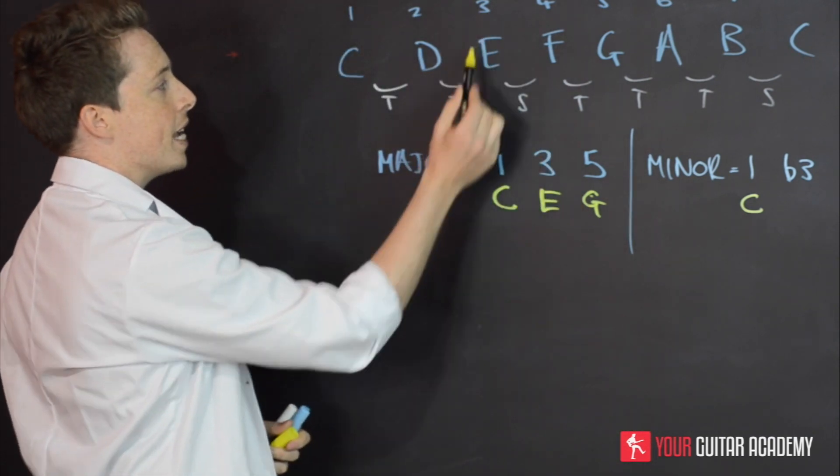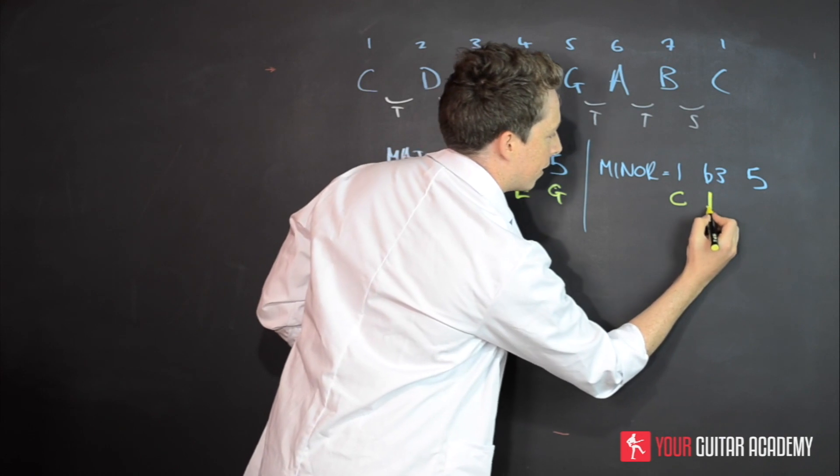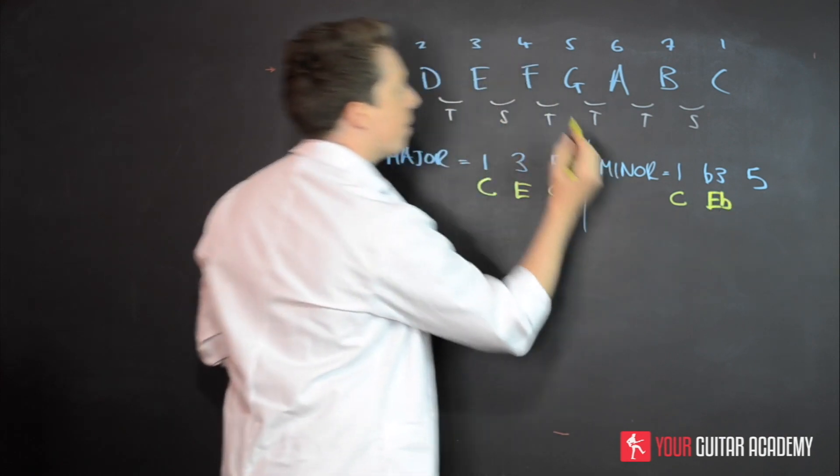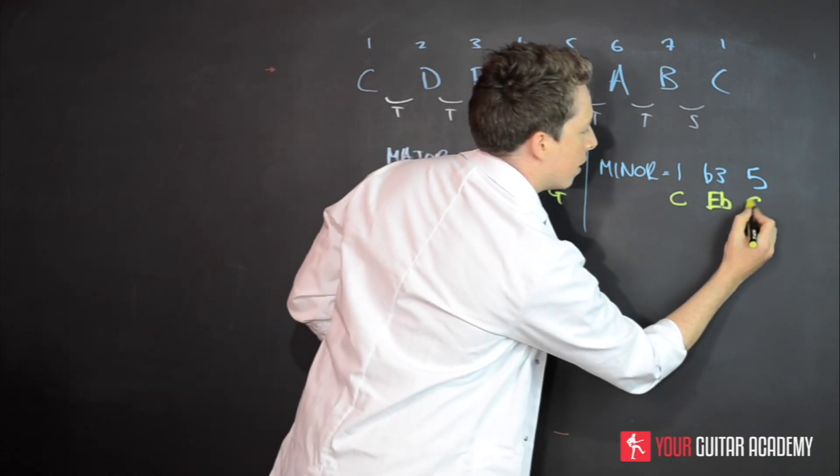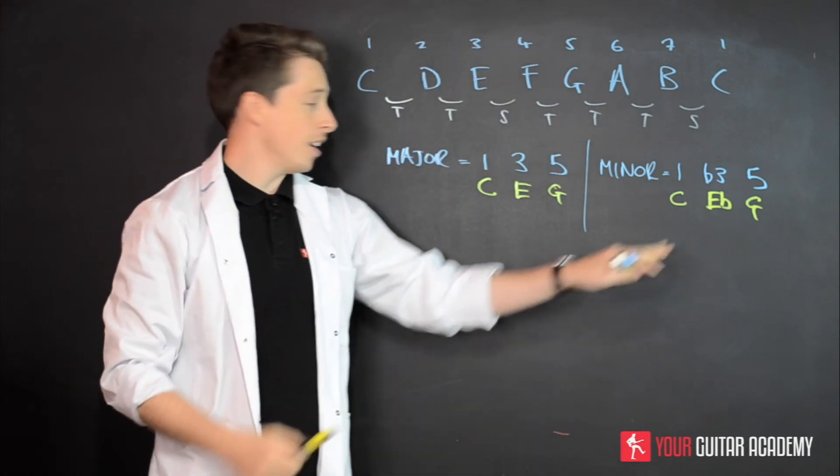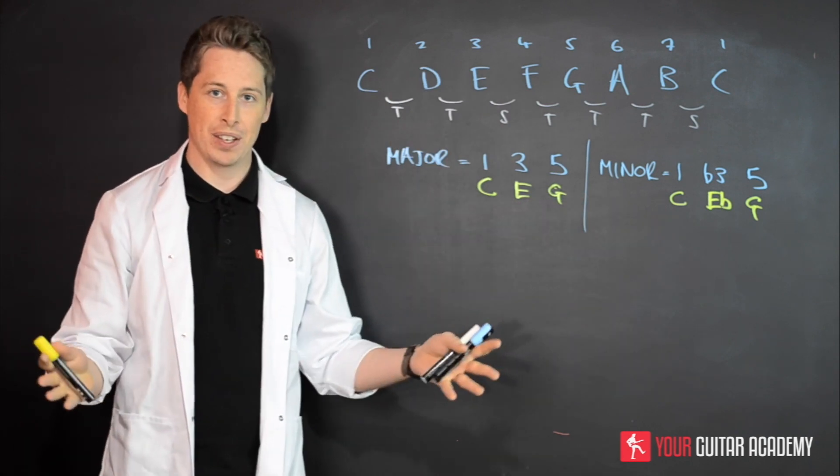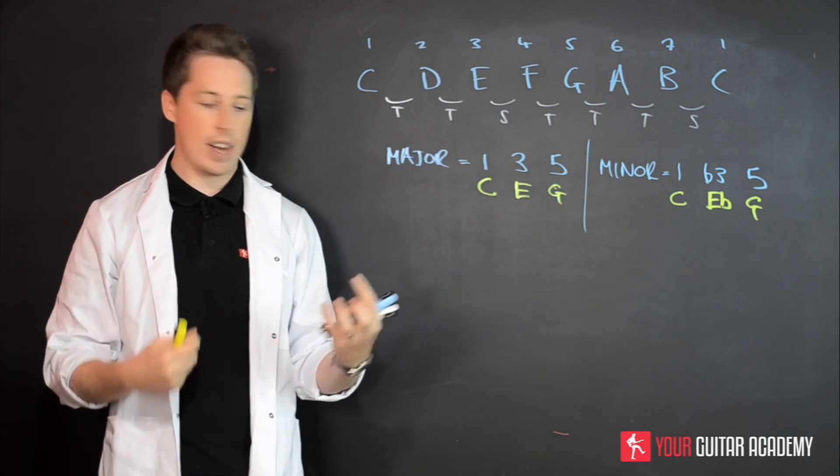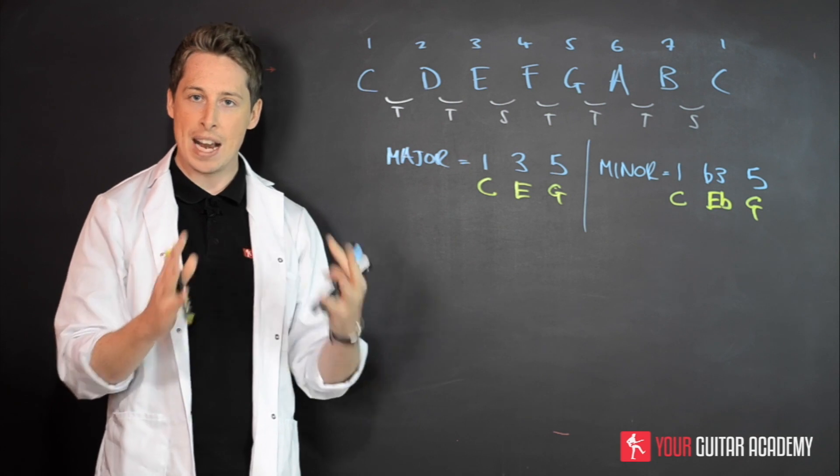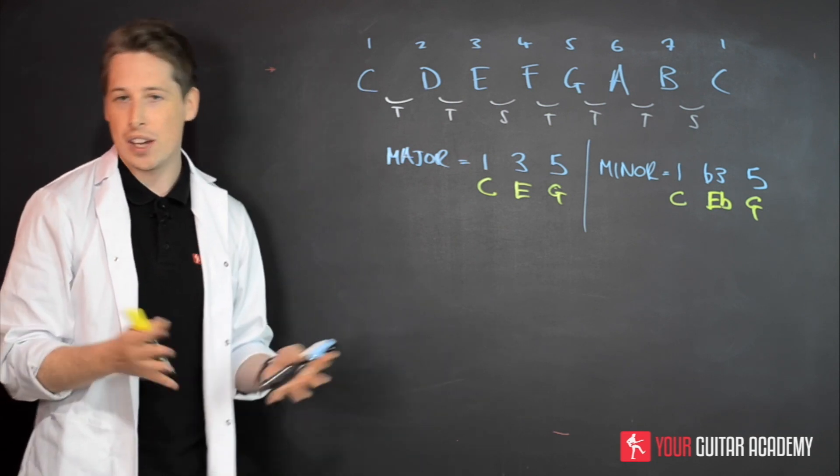So if we look at this, the C minor chord in this case will be a C because that's the root note. Now instead of the E, we're flattening it, so we've got E flat, and then the five is G. So those three notes anywhere on the guitar, a C and E flat and a G, will be a C minor chord. You can try it out for yourself now if you've got a guitar there. Try and just put those notes together anywhere on the guitar and you might even find some cool interesting shapes for a C minor chord.